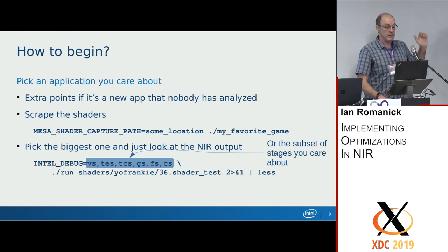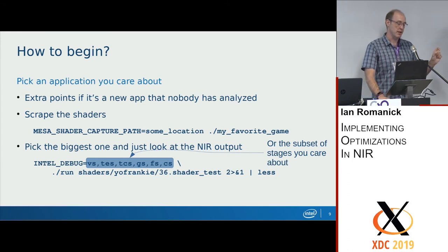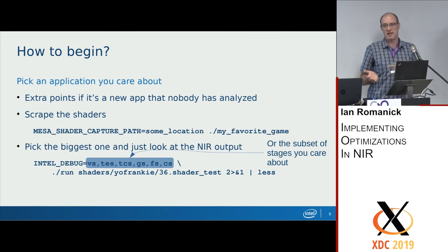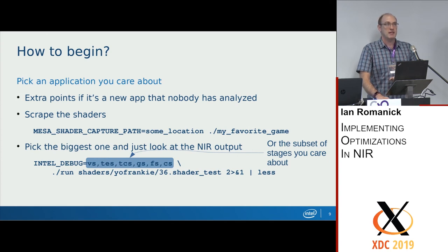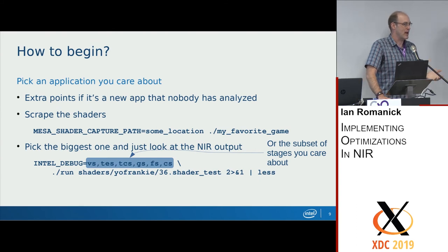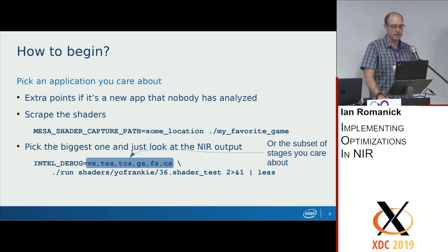If you run the app with that environment variable set, it'll dump all the shaders the application sends into the driver into a directory. You get a whole bunch of shaders with numbered names. Look through that directory and find the largest one — that's usually a good place to start because it probably has the most stuff. Sometimes that fails: there are lots of apps with an uber shader controlled by 247 different `#define`s, so all shader tests are half a megabyte with different hash defines controlling what they actually do. That can trick you, but it's usually a reasonable thing to try first.